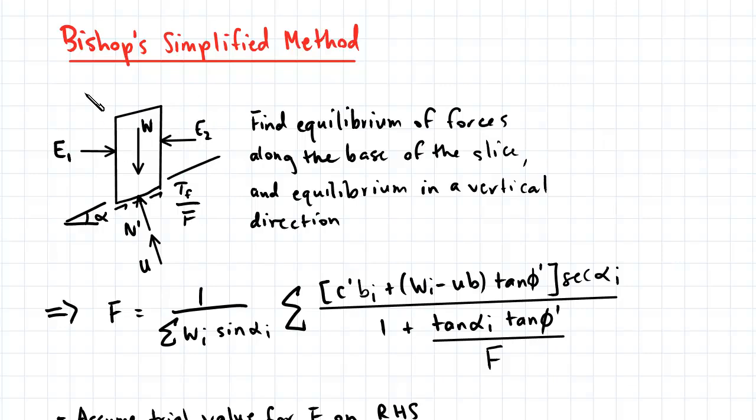Now I'm not going to run through the derivation for the expression of factor of safety which is used in Bishop's Simplified Method because it is a more complicated process. But the end result of the derivation will yield us this expression here, and one thing you might notice is that we have F, factor of safety, on both the left side and the right hand side of the expression.